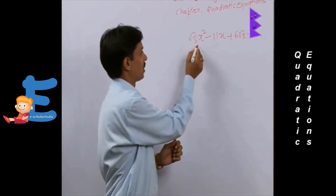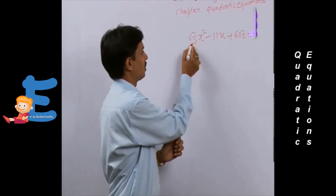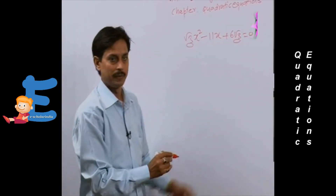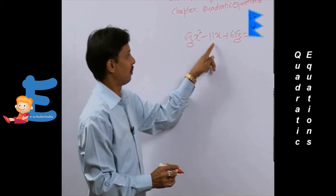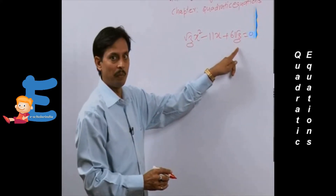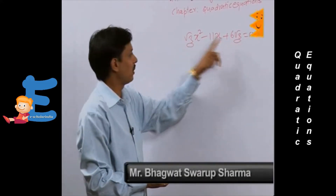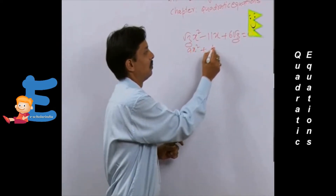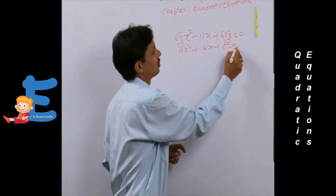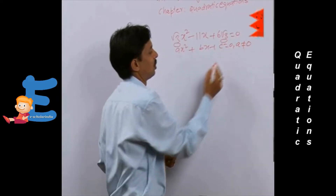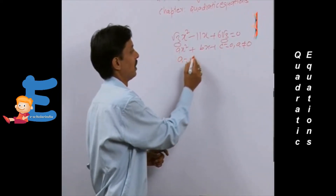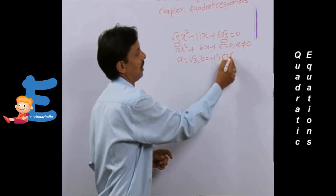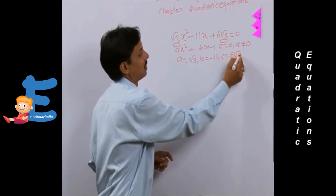What is the approach? First of all, coefficients a and c must be multiplied. Comparing with the standard form ax² + bx + c = 0, under the condition a ≠ 0, we get a = √3, b = -11, and c = 6√3.